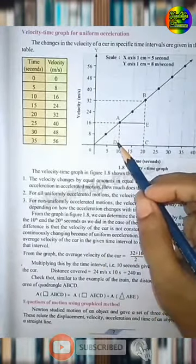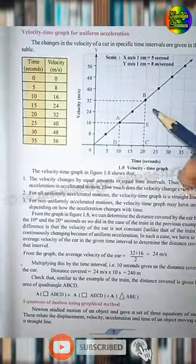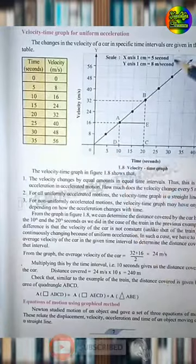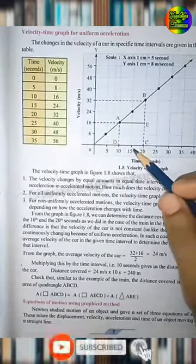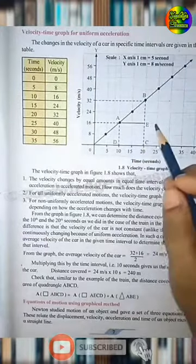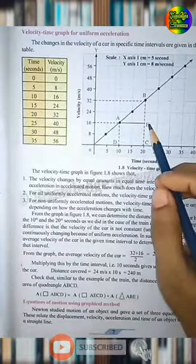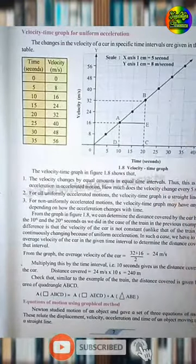For all uniformly accelerated motions, the velocity time graph is a straight line. For non-uniform accelerated motion, it may take any shape depending on how the acceleration changes with time.